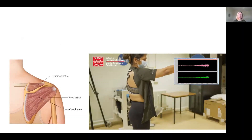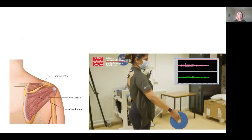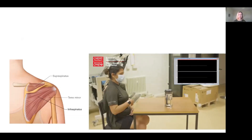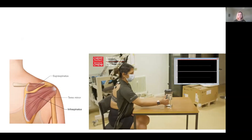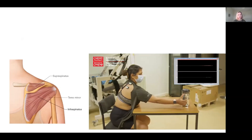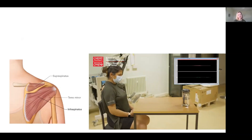You can see as she raises her arm there's a small amount of muscle activity in each muscle, and then when she relaxes that goes away. This is really important for physiotherapists to understand because we need to know how much muscles are active in different movements and when it's safe to prescribe them to people as part of their rehabilitation.